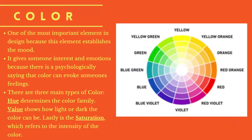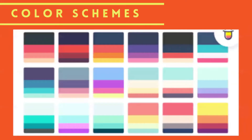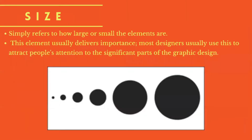The third element is color. This is one of the most important elements in design because it gives a certain feeling to a person. It gives someone interest and emotion since there is a psychological saying that colors can evoke someone's feelings. There are also three types of color: hue, which determines the color family; value, which shows the lightness or darkness of the color; and saturation, which shows the intensity of the color. The fourth element is size, which simply refers to how big or small the element is, and is usually used by designers to draw the audience's attention to significant parts of the design.